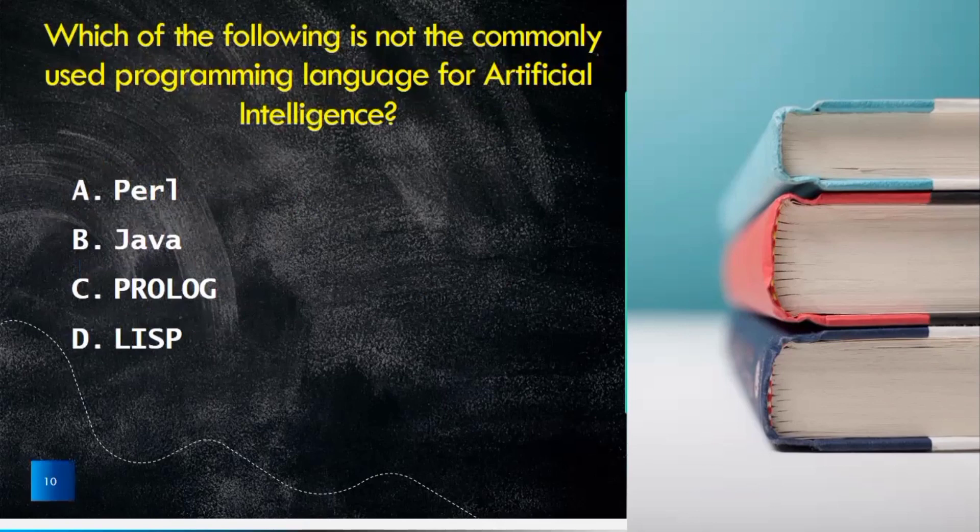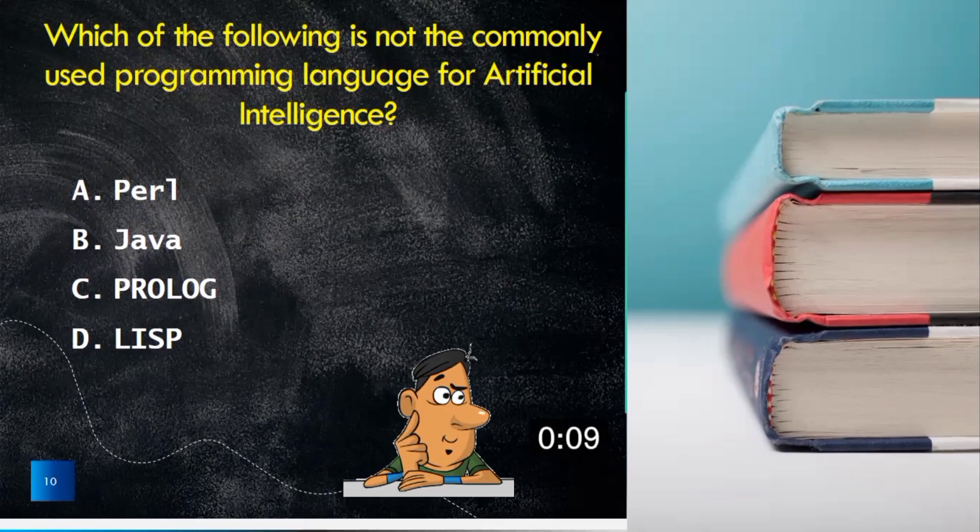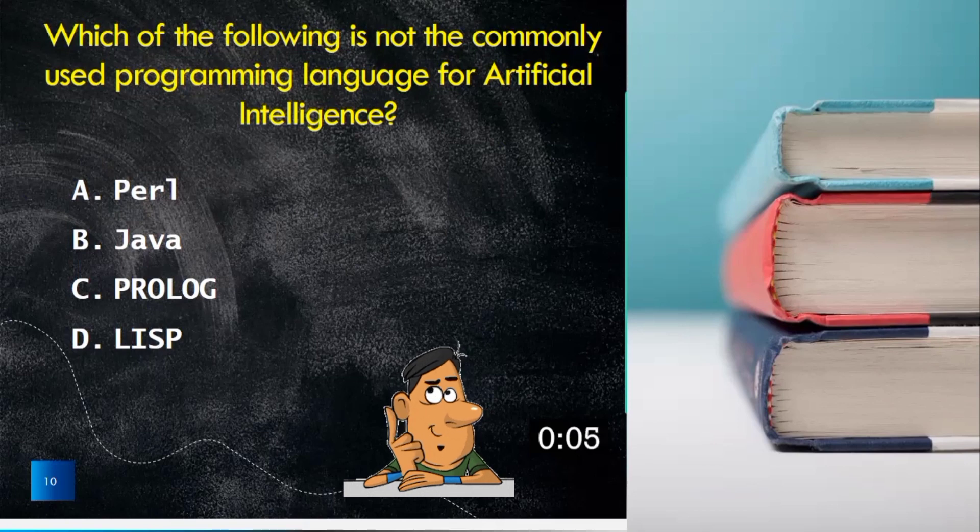Question number ten is which of the following is not the commonly used programming language for artificial intelligence? Perl, Java, Prologue or LISP? The true answer is Perl.